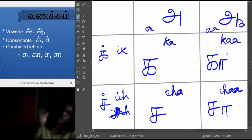So now we know eight letters: A, Ā, KA, KĀ, CHA, CHĀ, and including these two consonants IK and ITCH.